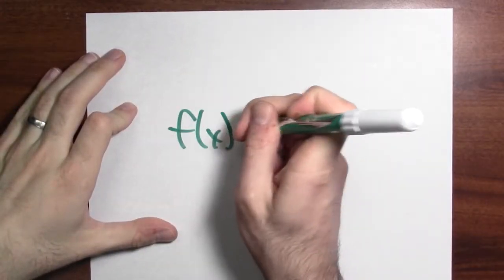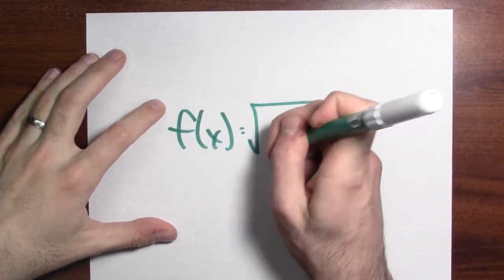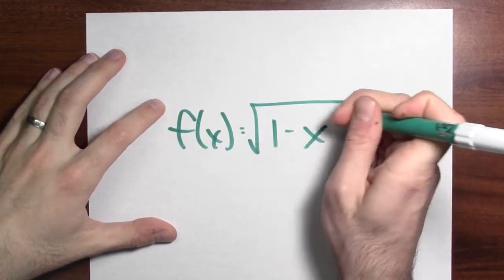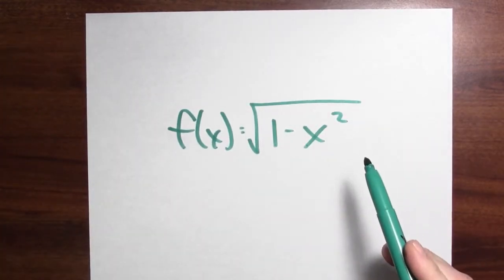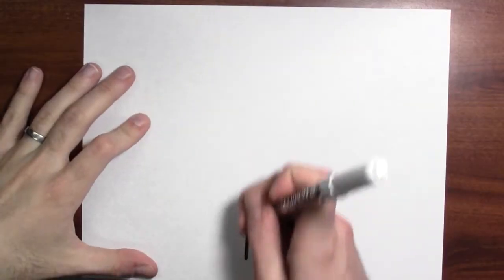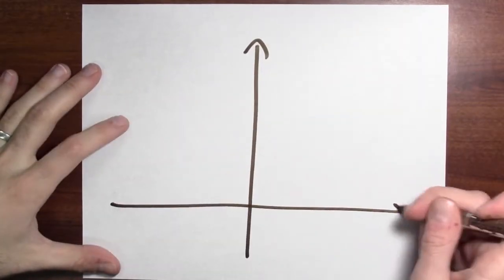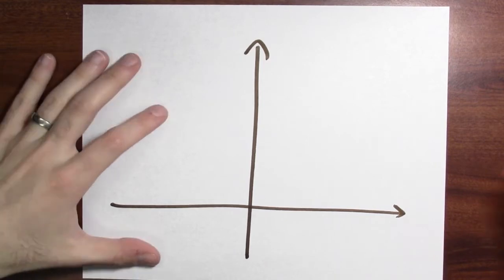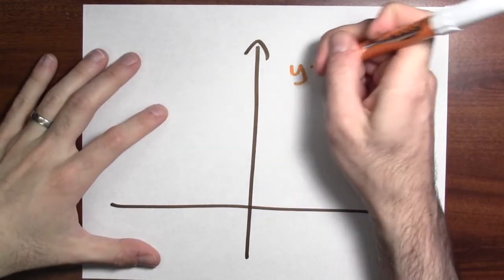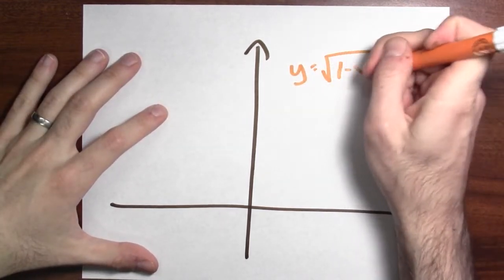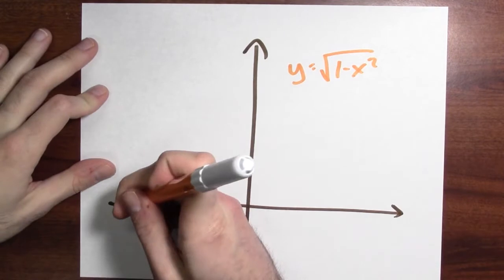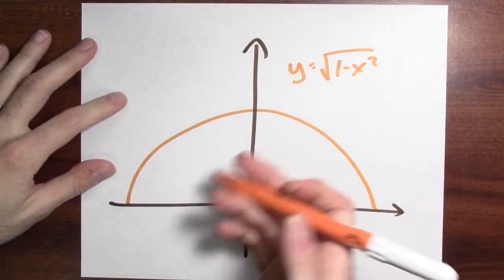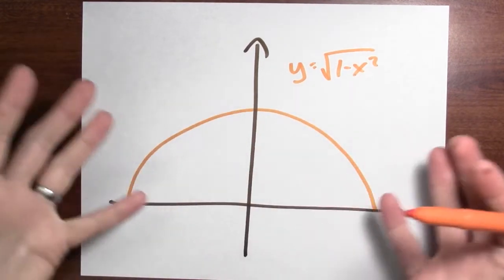Let's think a bit about circles. Let's think about the function f(x) equals the square root of 1 minus x squared. What do we get if we graph that function? Let me draw my coordinate axes. I'm trying to graph the function y equals the square root of 1 minus x squared, and when I graph that, I get a semicircle.